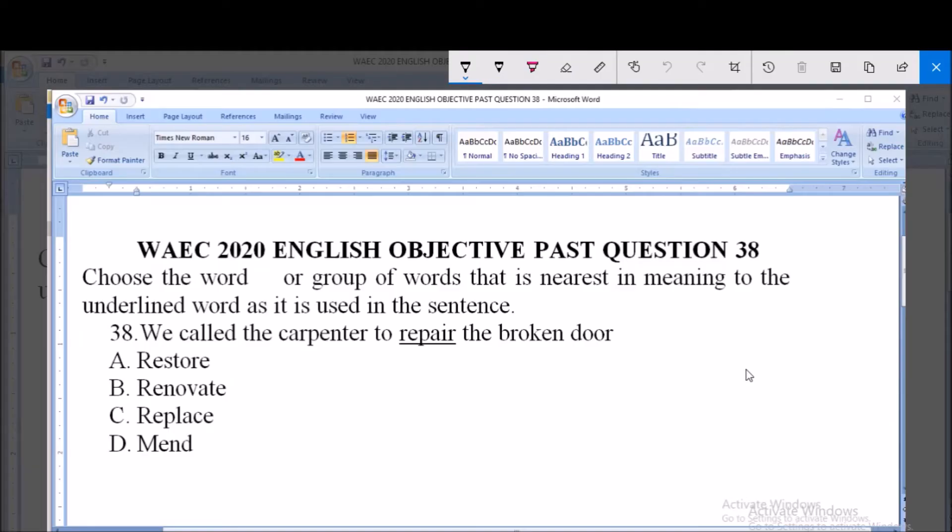Good afternoon, welcome. This is WAEC 2020 English objective past question, question number 38. The instruction here says that we should choose the word that is nearest in meaning to the underlined word in this sentence.